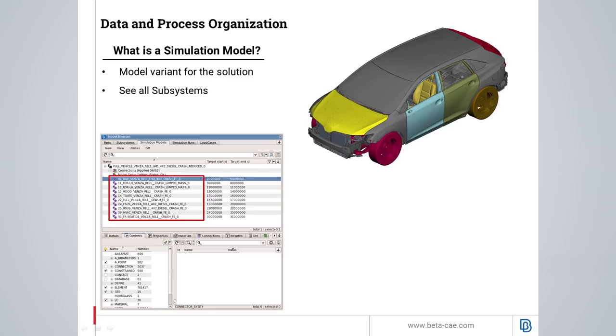Information of the target IDs or transformations is available. For example, for a specific subsystem, the user can view the range of IDs that it occupies in a specific simulation model.